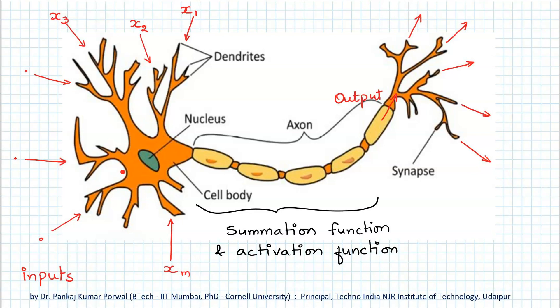What the cell body does is it receives all the inputs, which are either amplified or reduced, and combines them and then processes them further. The combination part is done by a function called the summation function, and further processing is done by a function called the activation function.